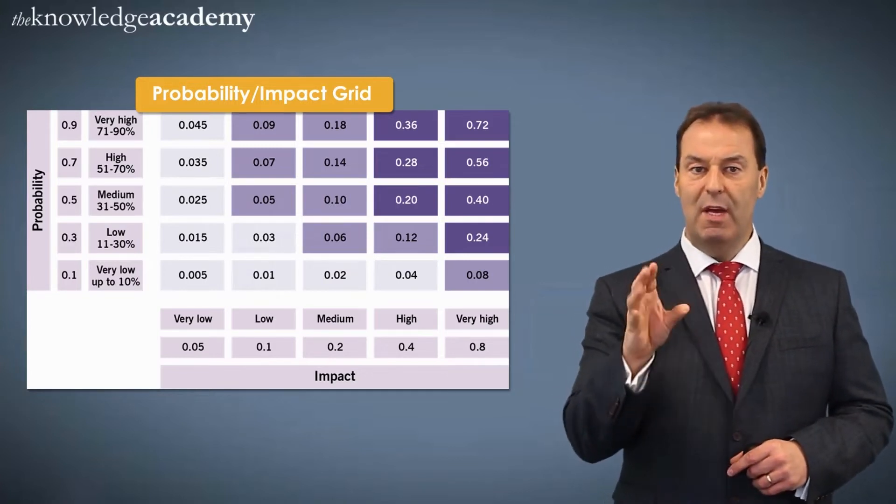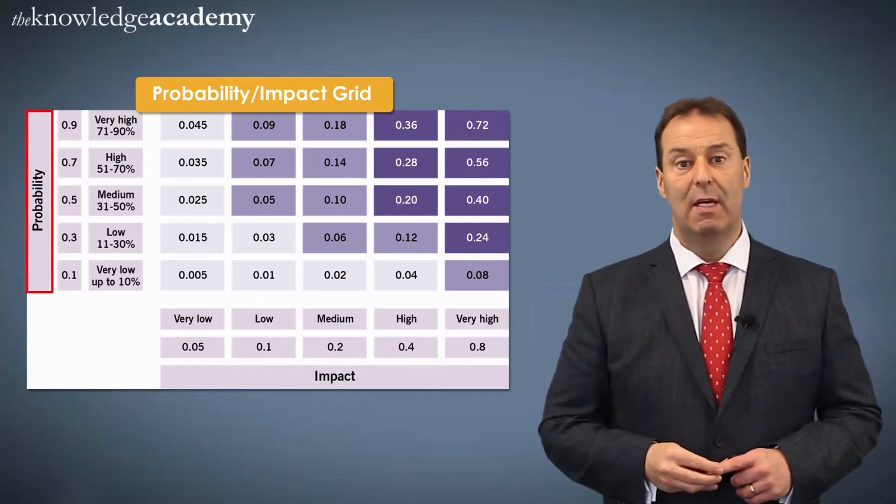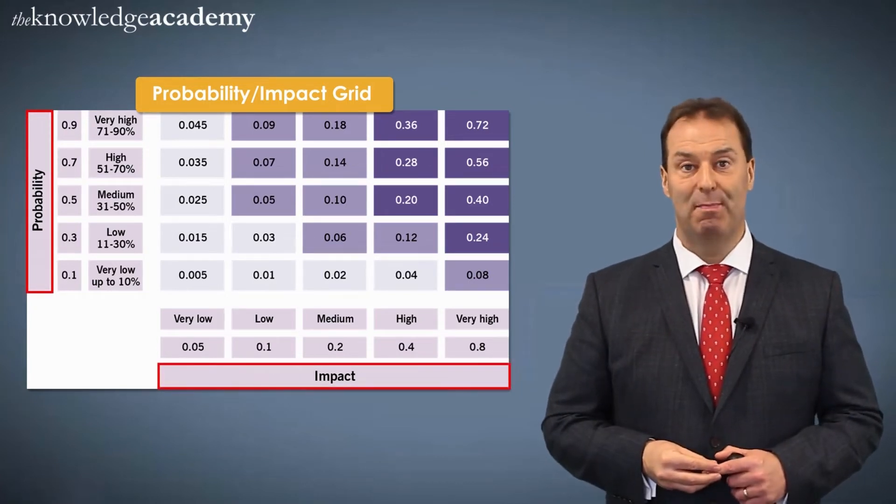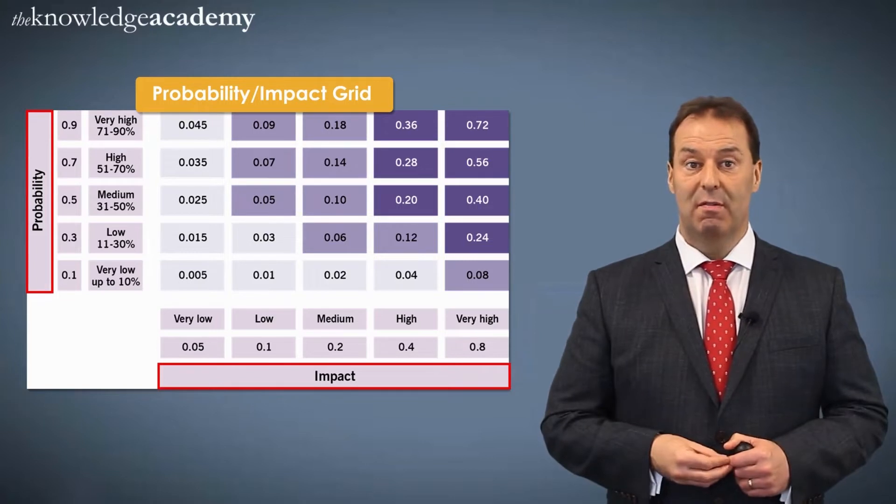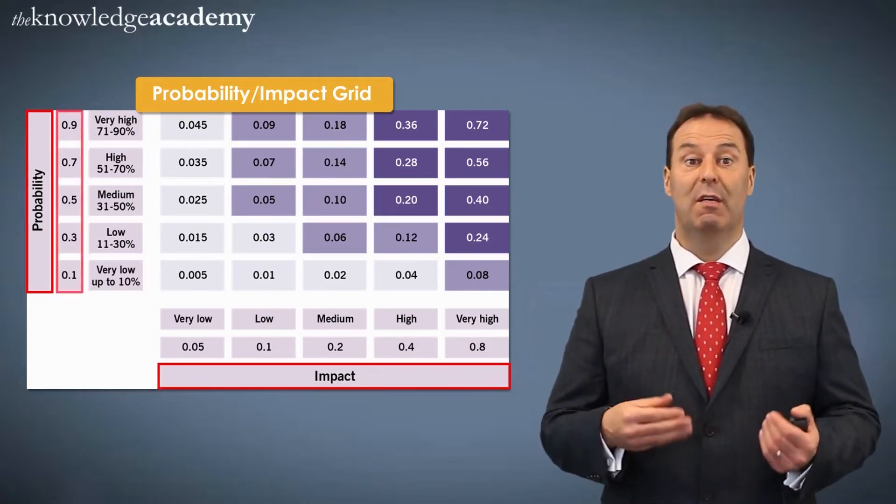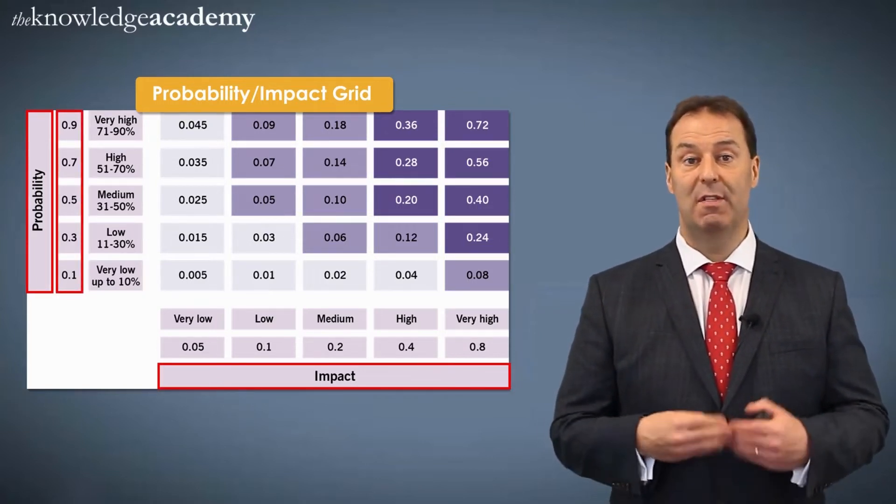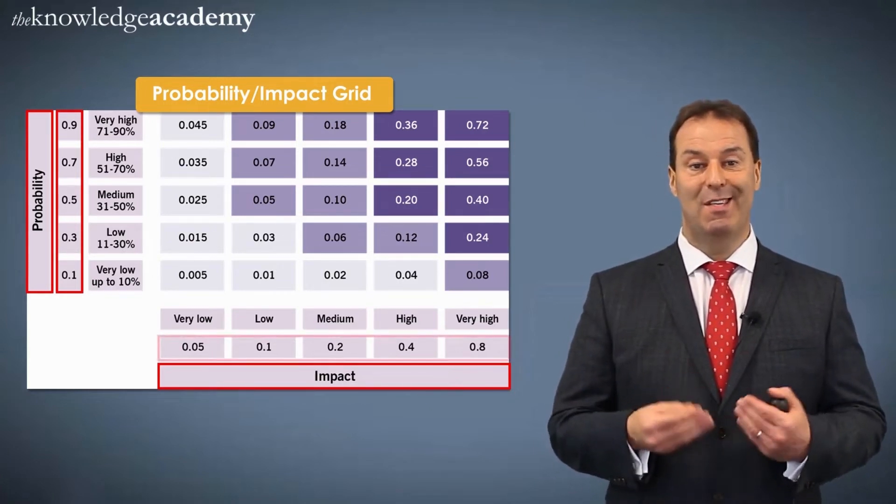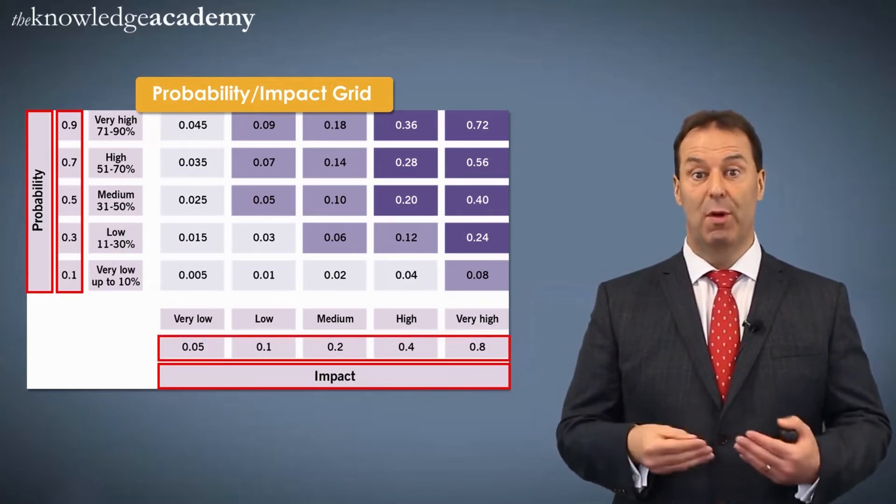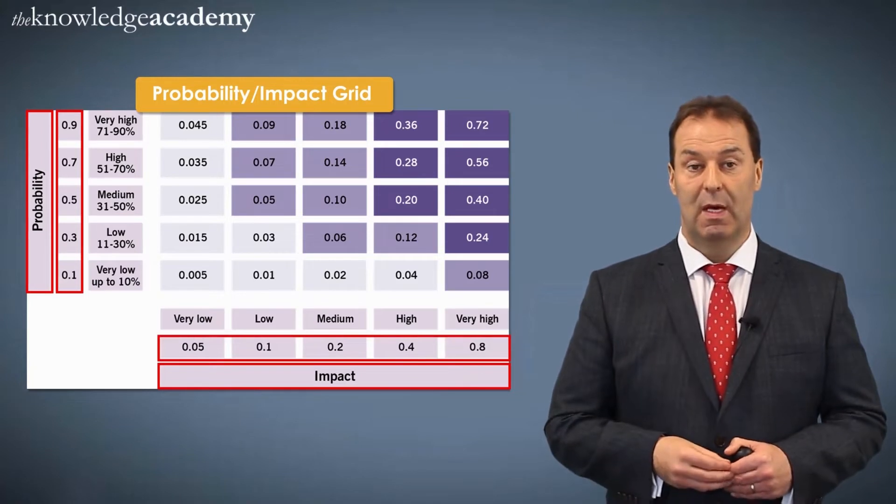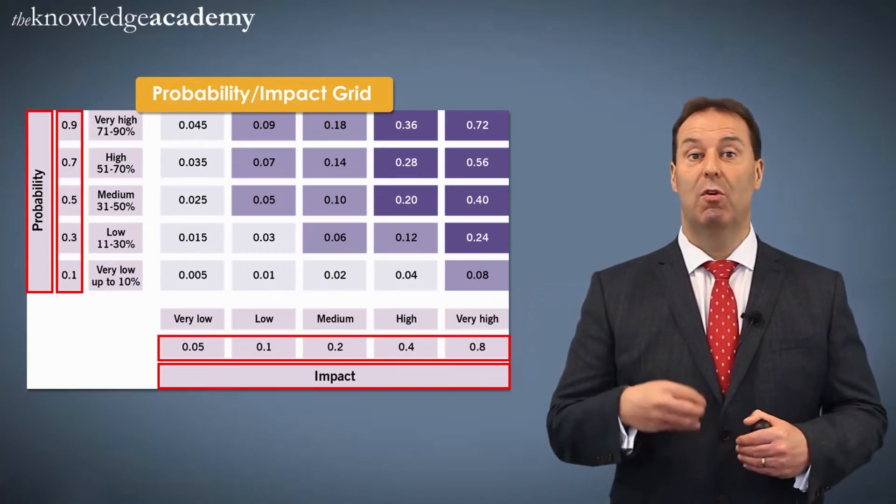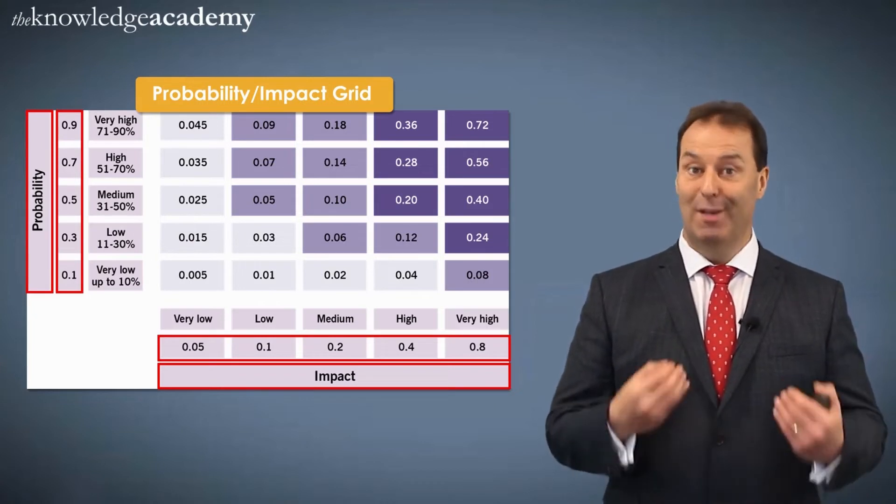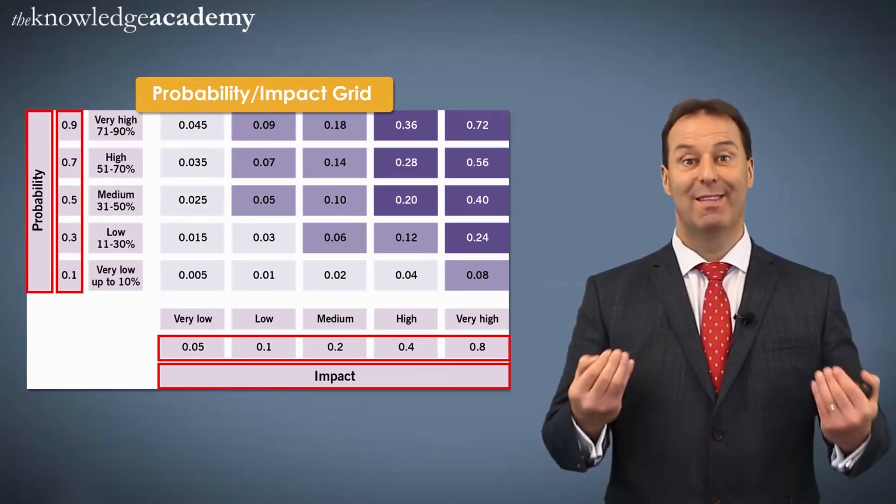But to begin with, there is a probability scale and there is an impact scale. Next to these headings, you can see values. For example, next to probability, you can see 0.9, 0.7, 0.5. Next to impact, you can see 0.05, 0.1, 0.2, and so on. Now, these scales are recorded in your risk management approach under the heading, quite aptly, the scales heading.